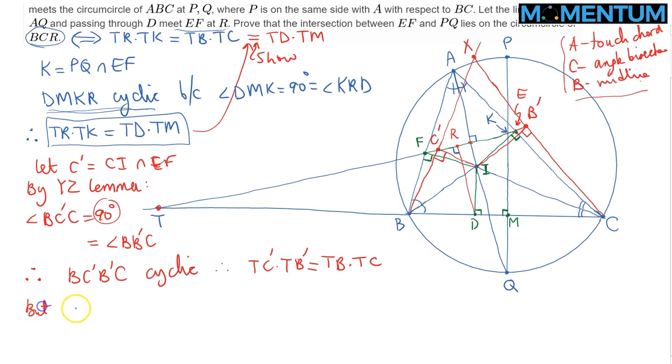That suggests that C'DB'M are also cyclic, simply because DC'B'M is the nine-point circle of triangle BXC.